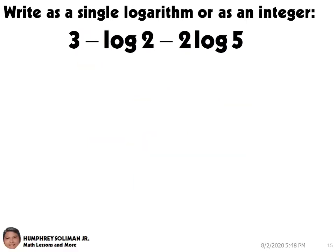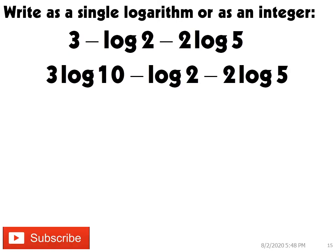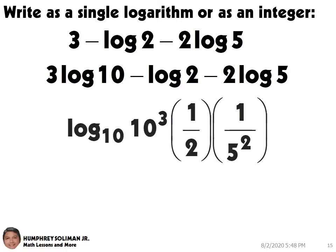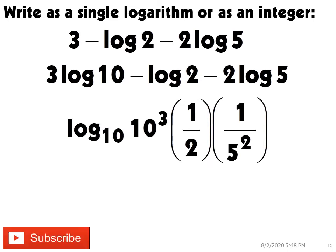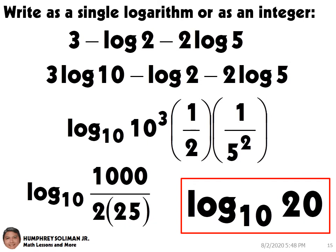Let's try another example: 3 minus log 2, minus 2 times log 5. We can write 3 as 3 log 10, since log 10 is equal to 1. And then, we can rewrite this as a single logarithm. Simplifying further, we can get log base 10 of 20.